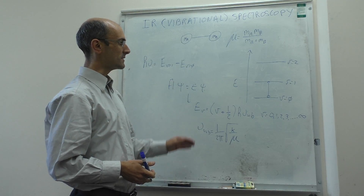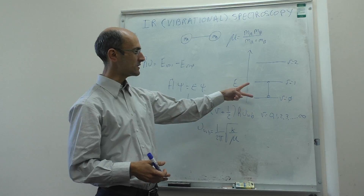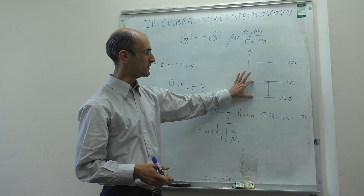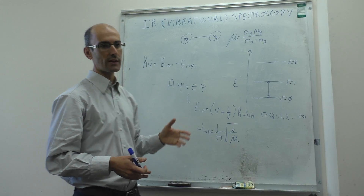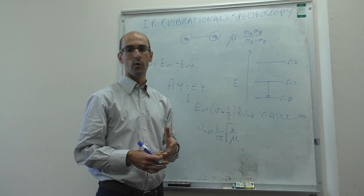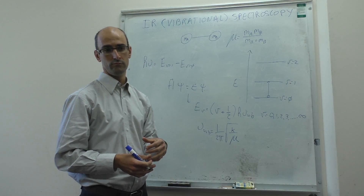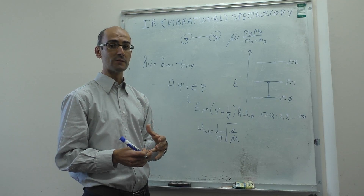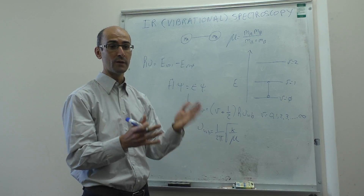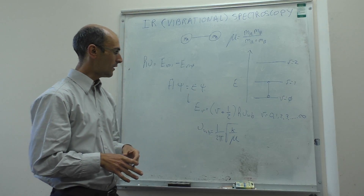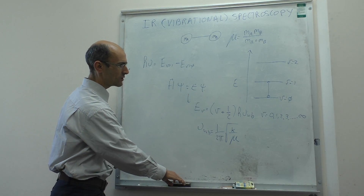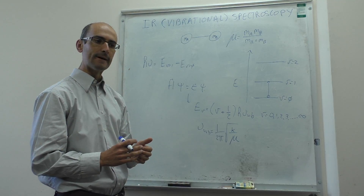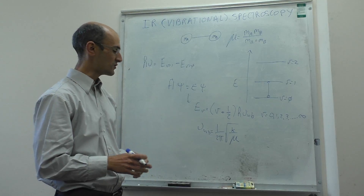Having this expression allows us to calculate exactly what the difference in energy is between these two energy states, meaning we can predict what photons will be absorbed when you take the infrared spectrum of this molecule and where those peaks will appear. We also need to talk about selection rules to see what type of excitations we can actually observe.